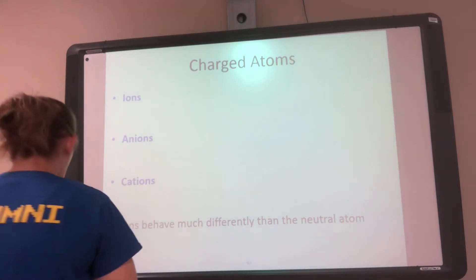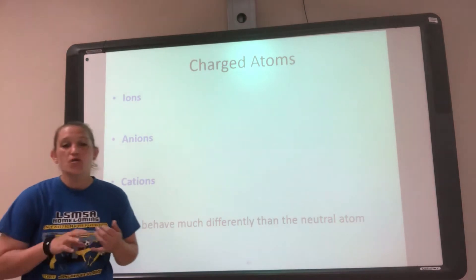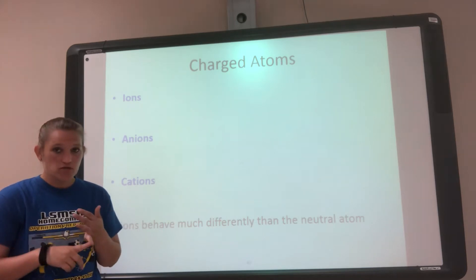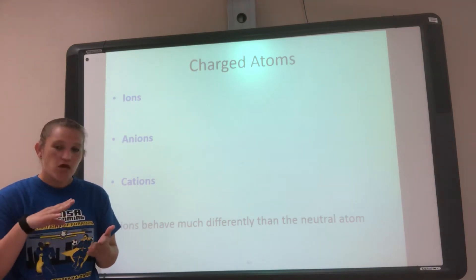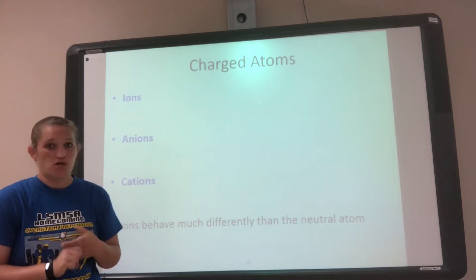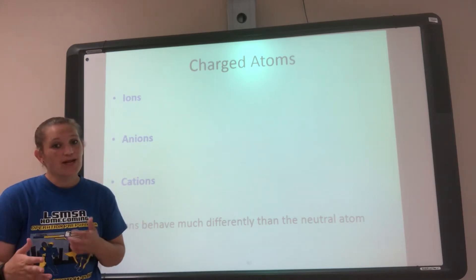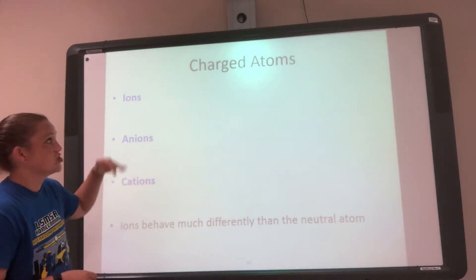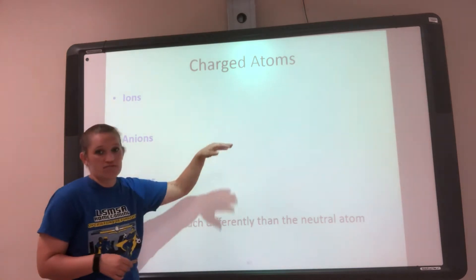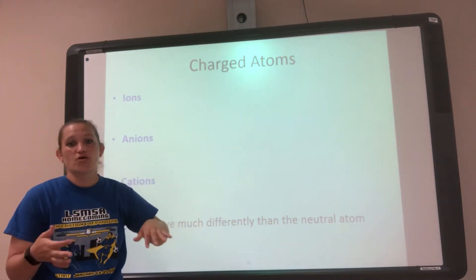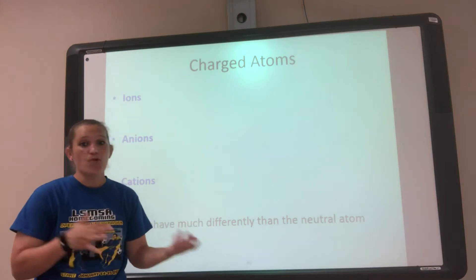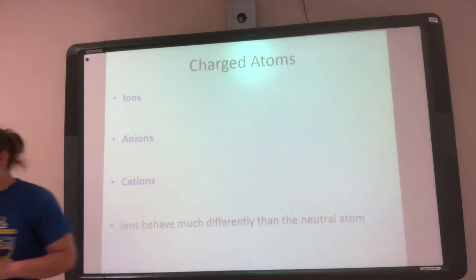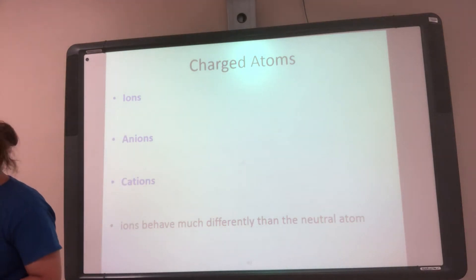Last class we talked about: if you change the number of protons it's a different element, if you change the number of neutrons it's an isotope. Now we're going to talk about what if you change the number of electrons. If I change the number of electrons then I'm adjusting the charge, and depending on how I'm adjusting the electrons I may become more negative or more positive, because an electron is a negatively charged particle.